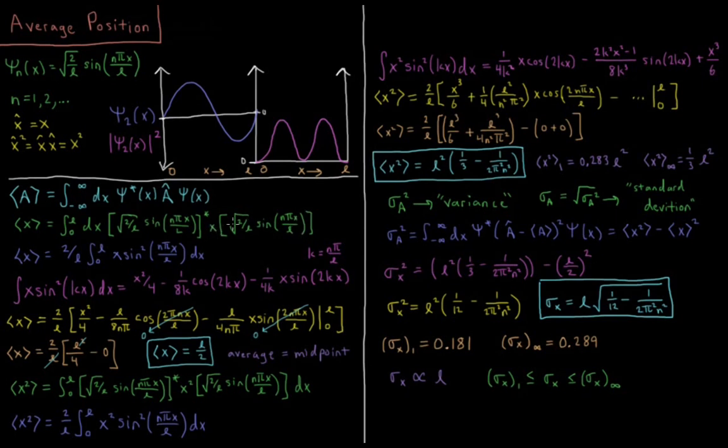So this times x times square root of 2 over l sine n pi x over l. Multiplication doesn't do anything to this wave function, so we can just take x times our wave function squared. What we get is the expectation value of x equals 2 over l integral from 0 to l of x times sine squared n pi x over l.